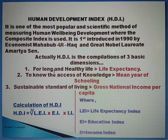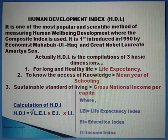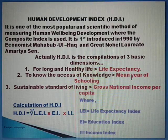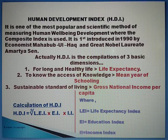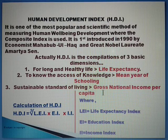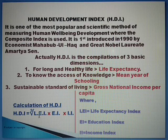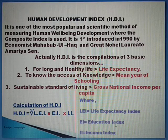For a long and healthy life, HDI uses the Life Expectancy Index. To know the access to knowledge, it uses the Mean Years of Schooling or Educational Index. To know the sustainable standard of living of a particular area, the Gross National Income or Income Index is used. The formula is: HDI equals the cube root of (LEI × EI × II), where LEI represents the Life Expectancy Index, EI represents the Education Index, and II represents the Income Index.